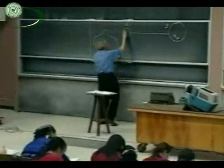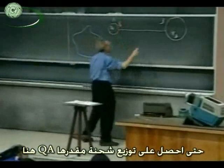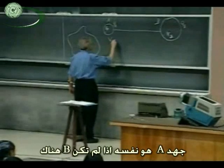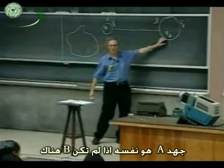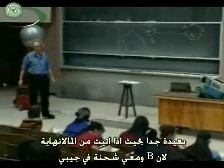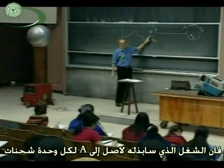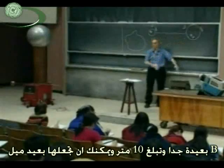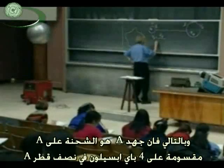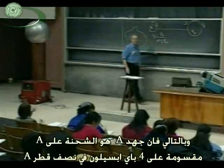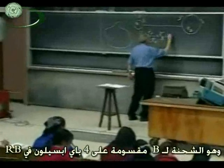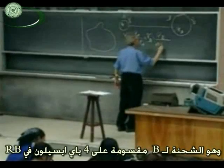I'm going to charge them up, so I get a charge Q_A on A and Q_B on B. The potential of A is about the same as it would be if B were not there, because B is so far away that the work done per unit charge coming from infinity to reach A is independent of whether B is there or not. So the potential of A is Q_A divided by 4πε₀ R_A. Since this is an equipotential, this must also equal the potential of sphere B, which is Q_B divided by 4πε₀ R_B.